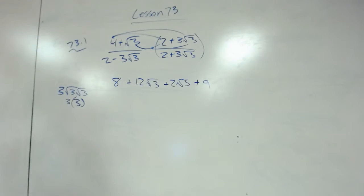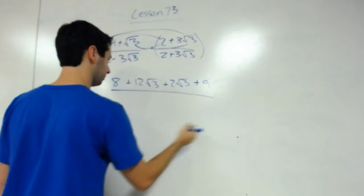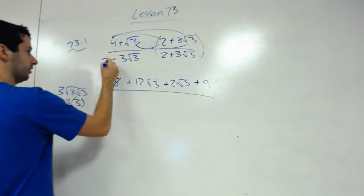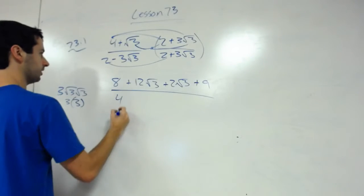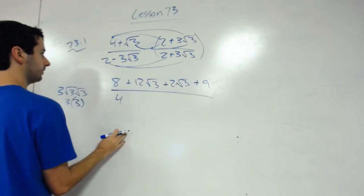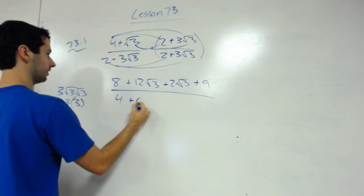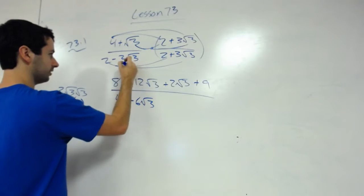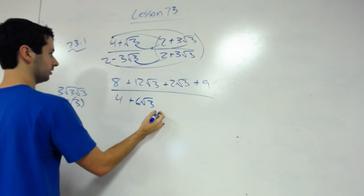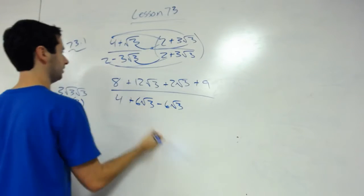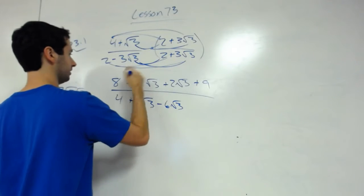And then we do the bottom. We'll simplify that later. First, it's 2 times 2 is 4. Outside, 2 times 3√3 is plus 6√3. Inside, minus 6√3.